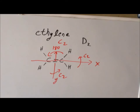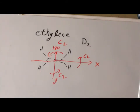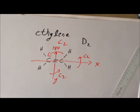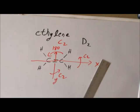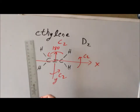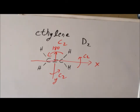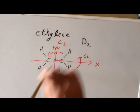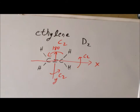Now we want to look for mirrors. Since ethylene is planar, it has a mirror plane in the plane of the board. This mirror plane is perpendicular to our high-order rotation axis — it is a horizontal mirror. Therefore, we have a D2H point group.